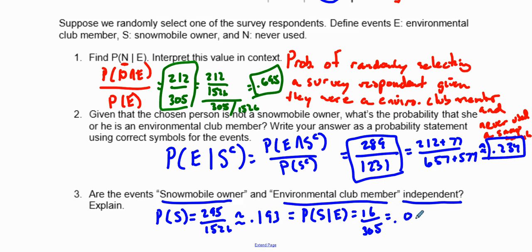16 divided by 305 equals 0.052. Those are not equal, so therefore they are not independent events.